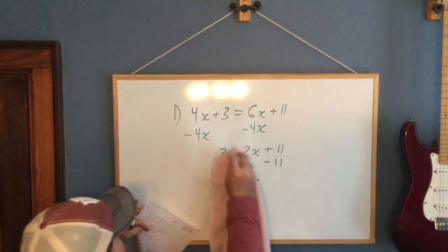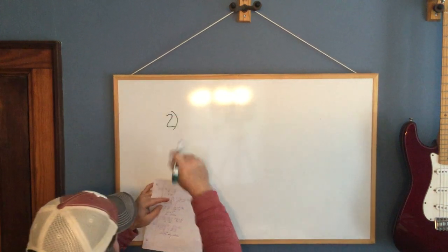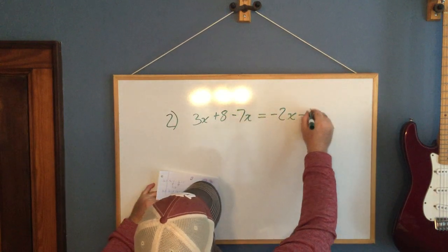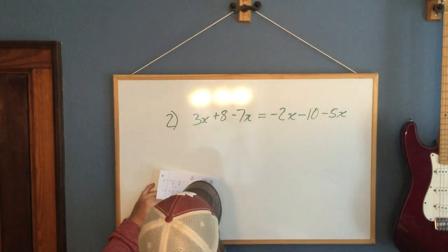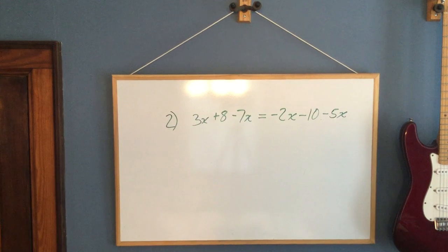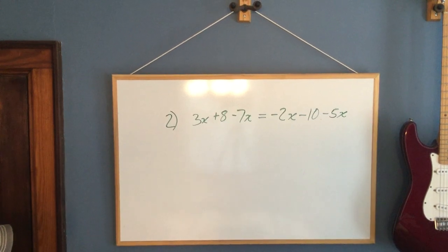Let's look at a second example. Number 2. Let's do 3x plus 8 minus 7x equals negative 2x minus 10 minus 5x. Give me one second. I'm going to come off camera here real quick. Sorry about that, guys. My wife is on the phone making phone calls to her parents. She's a teacher as well. My dog was barking, so I had to go let them in.